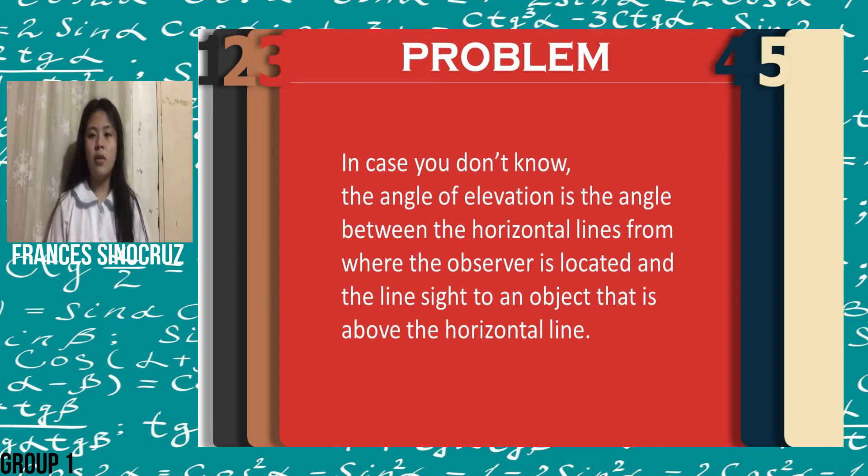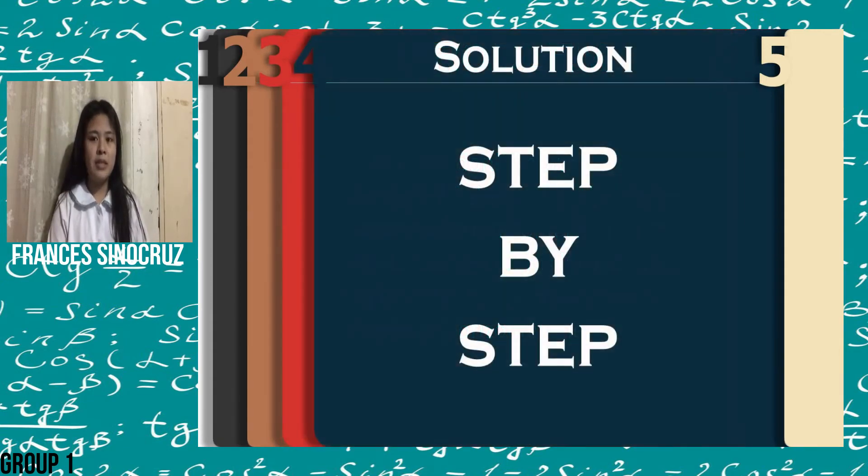In case you didn't know, the angle of elevation is the angle between the horizontal line from where the observer is located and the line of sight to an object that is above the horizontal line. Now we will solve the problem step by step.